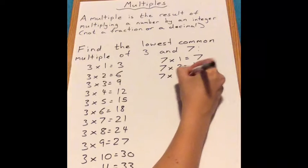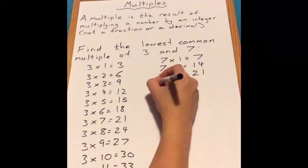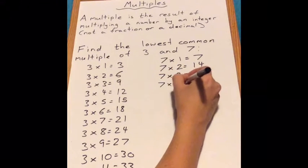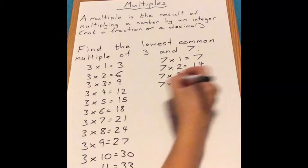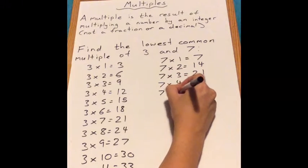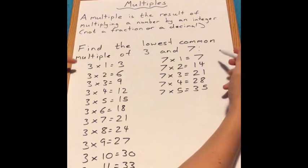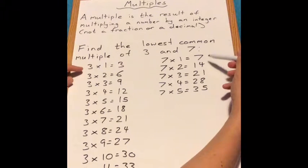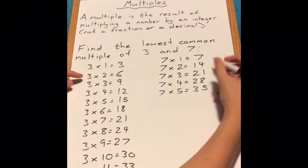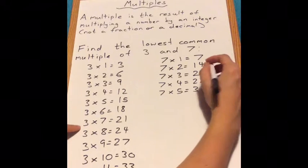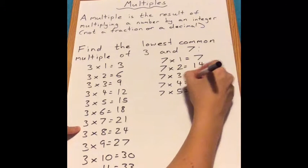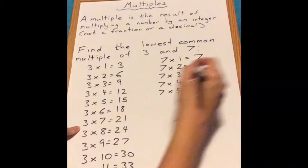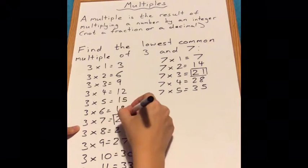What you do then is keep going until we've come across a number that matches what we have on the other side. So for instance, let's have a look down. We've not got any 7s and we've not got 14. We have got 21. And in fact, we've got 21 there and we have 21 there.